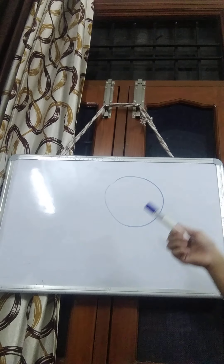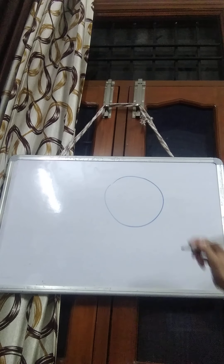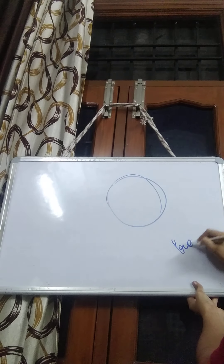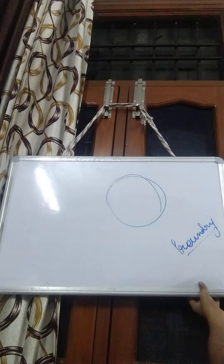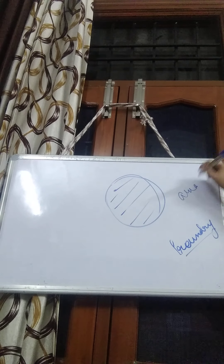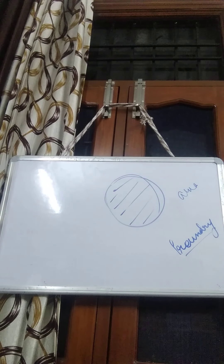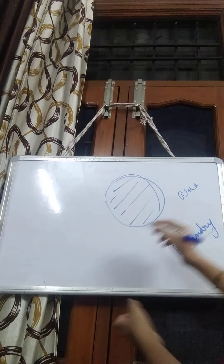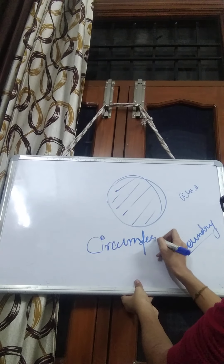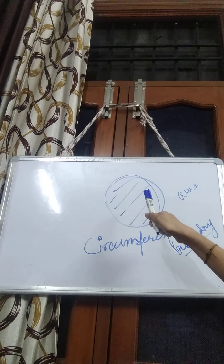Here I have drawn a circle. Now, what is perimeter? Perimeter is the boundary. But the inner region inside the circle is the area. Now for rectangles and squares we say perimeter, but for a circle the perimeter is known as circumference. So circumference is the term we use for the perimeter, or boundary, of a circle.